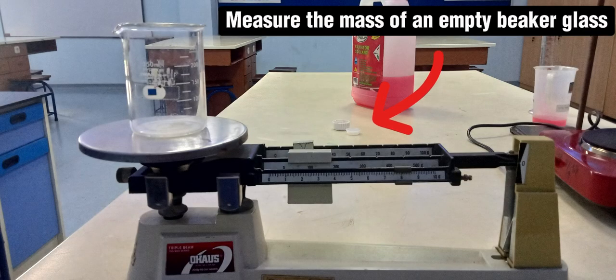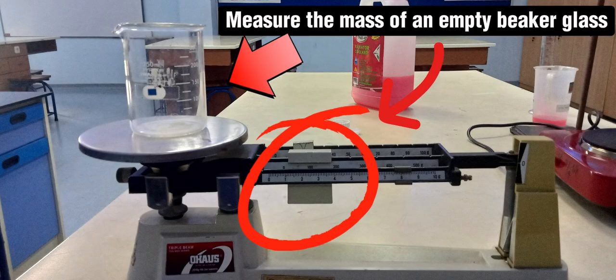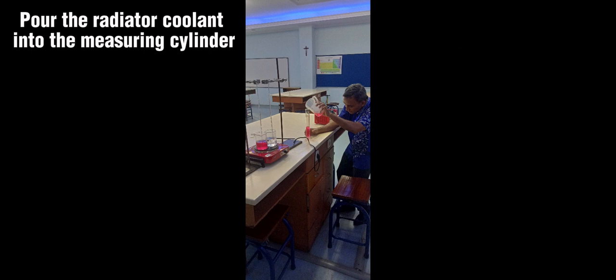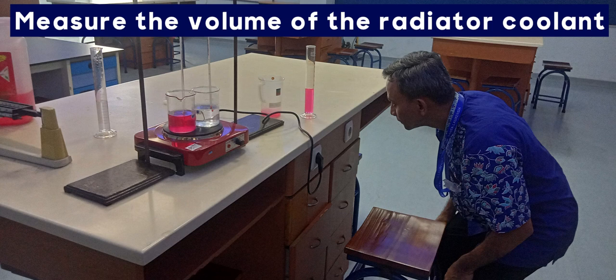Measure the mass of an empty beaker glass. Pour the radiator coolant into the measuring cylinder and measure the volume of the radiator coolant.